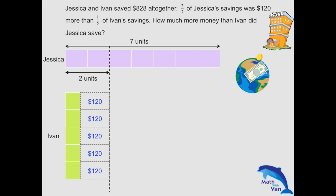We know the total is $828. At this point, there is no way we can solve the individual value for the purple or the green block. So what do we do? Either we change all to purple or we change all to green. Looking at this, we can identify the relationship between the purple and the green block: for every two purple blocks, it actually equals one green block plus $120.